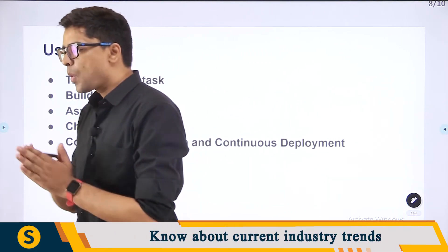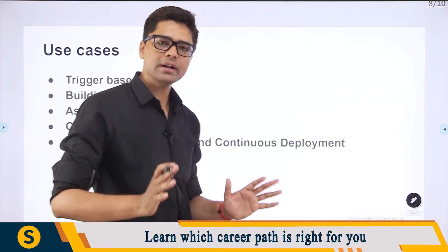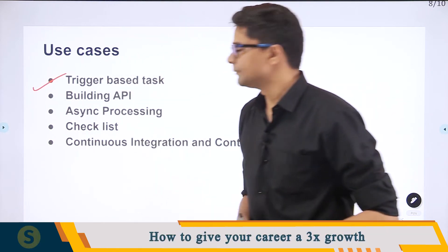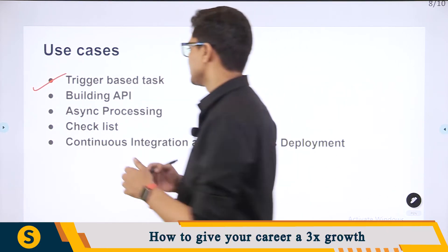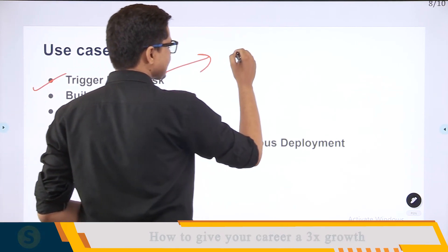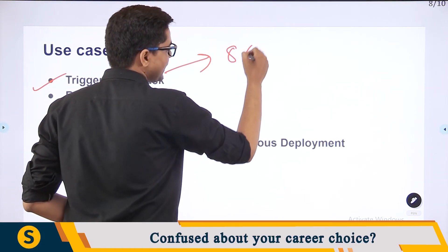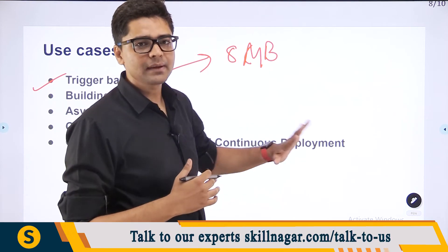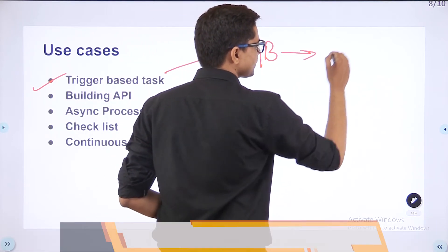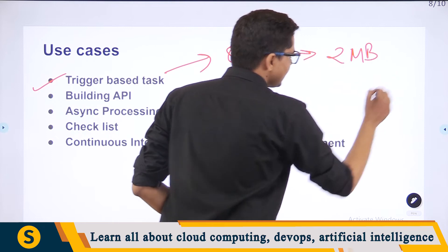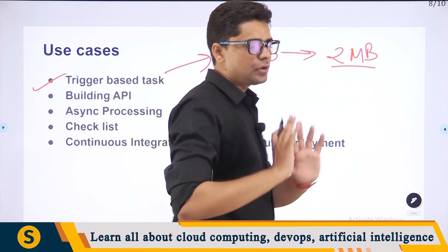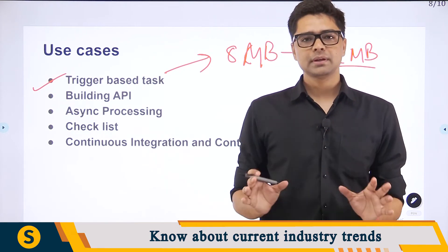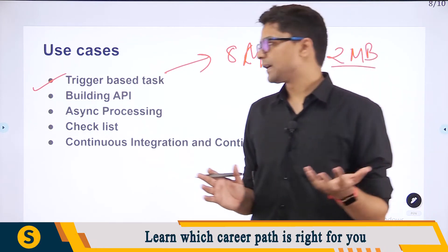Now let's understand the use cases of serverless. First is a trigger-based scenario. For example, you upload an 8-megabyte image on Instagram — it triggers the system to convert that image down to 2 megabytes, reducing its size. Images are one of the most commonly used functionalities with serverless compute.